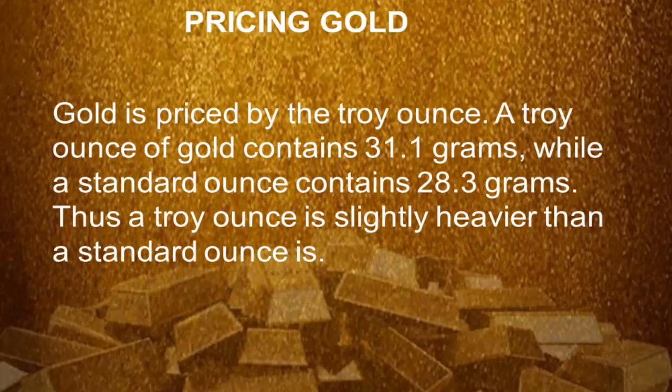Gold is priced by the troy ounce. A troy ounce of gold contains 31.1 grams, while a standard ounce contains 20.3 grams. Thus, a troy ounce is slightly heavier than a standard ounce.